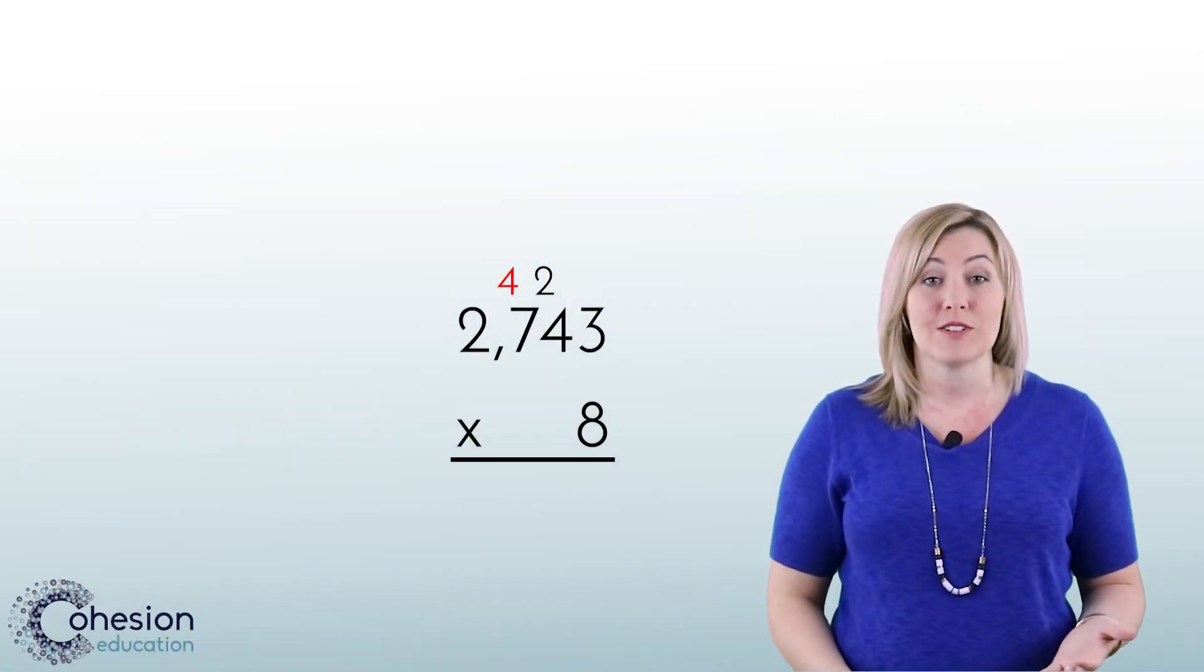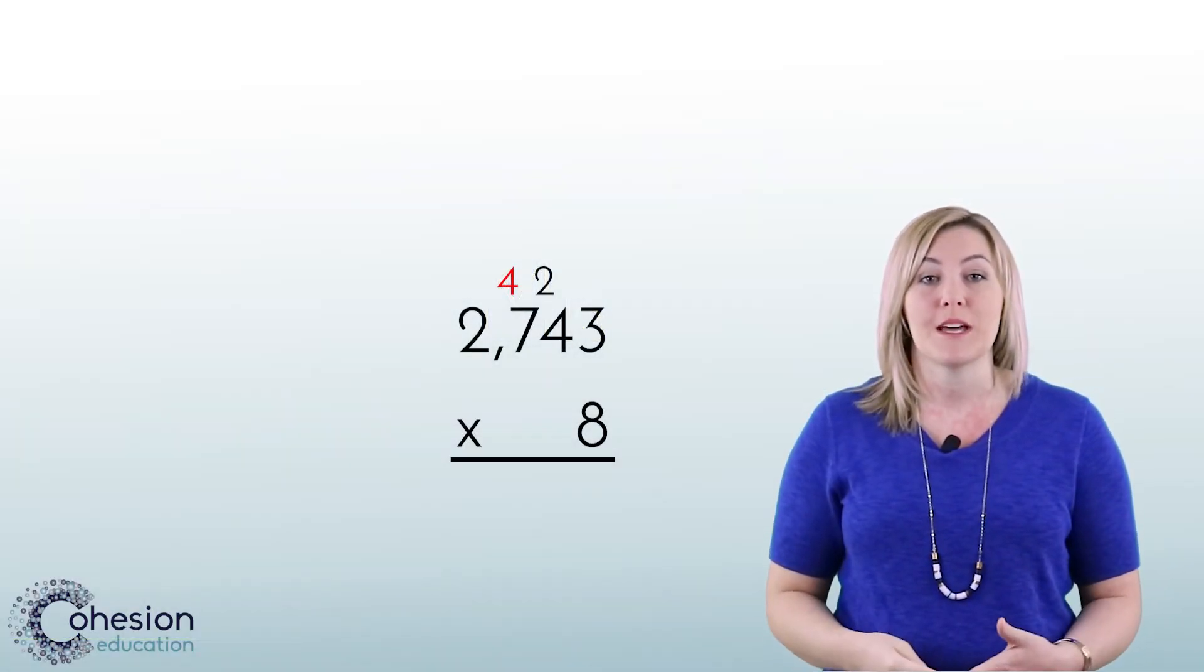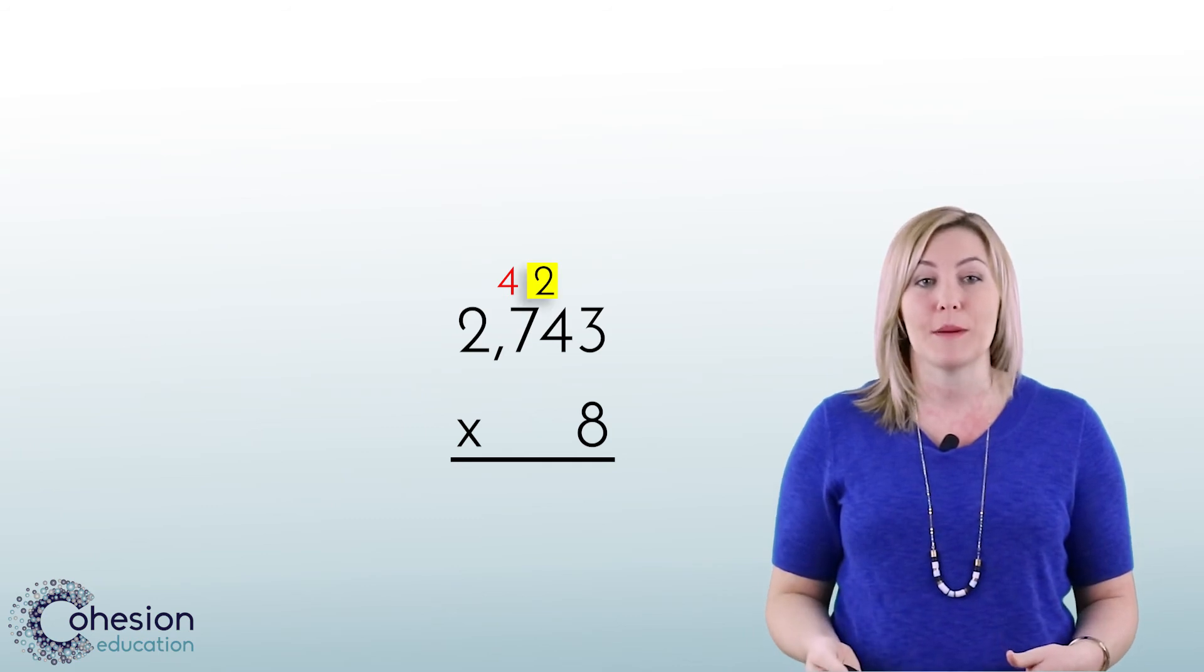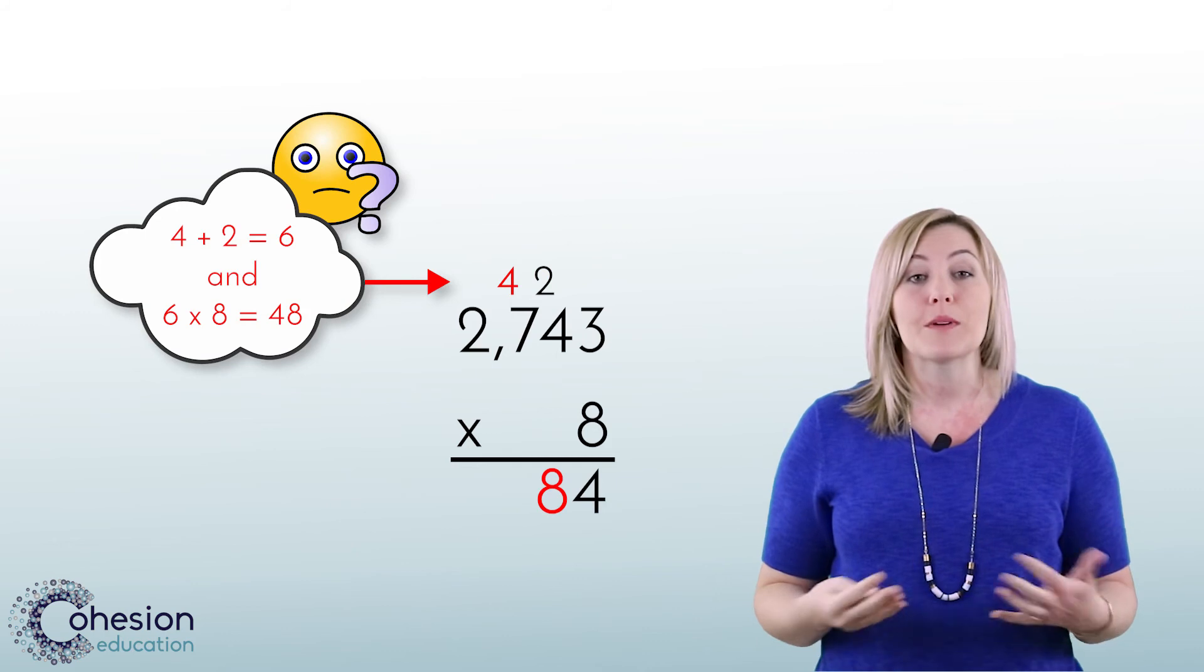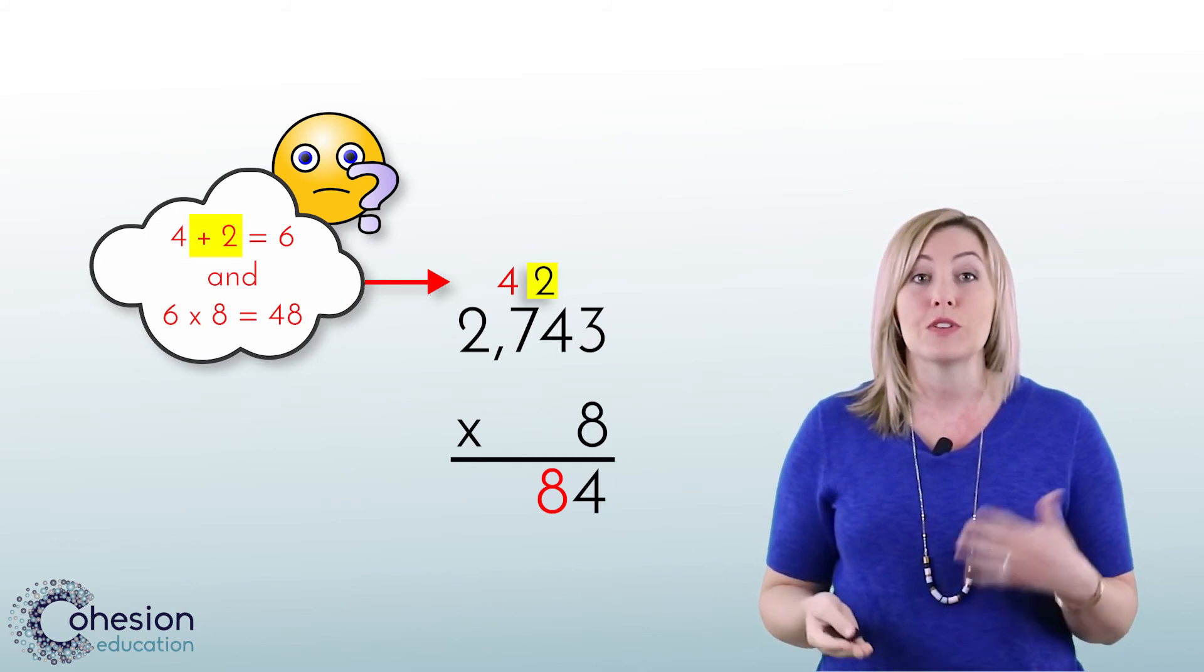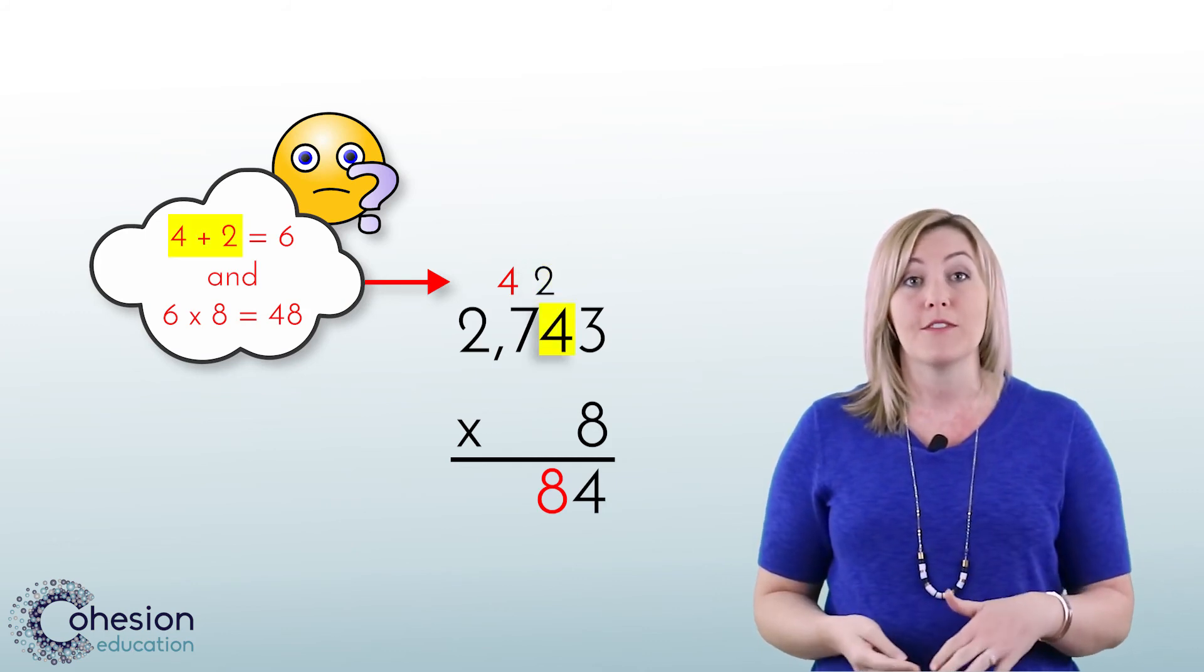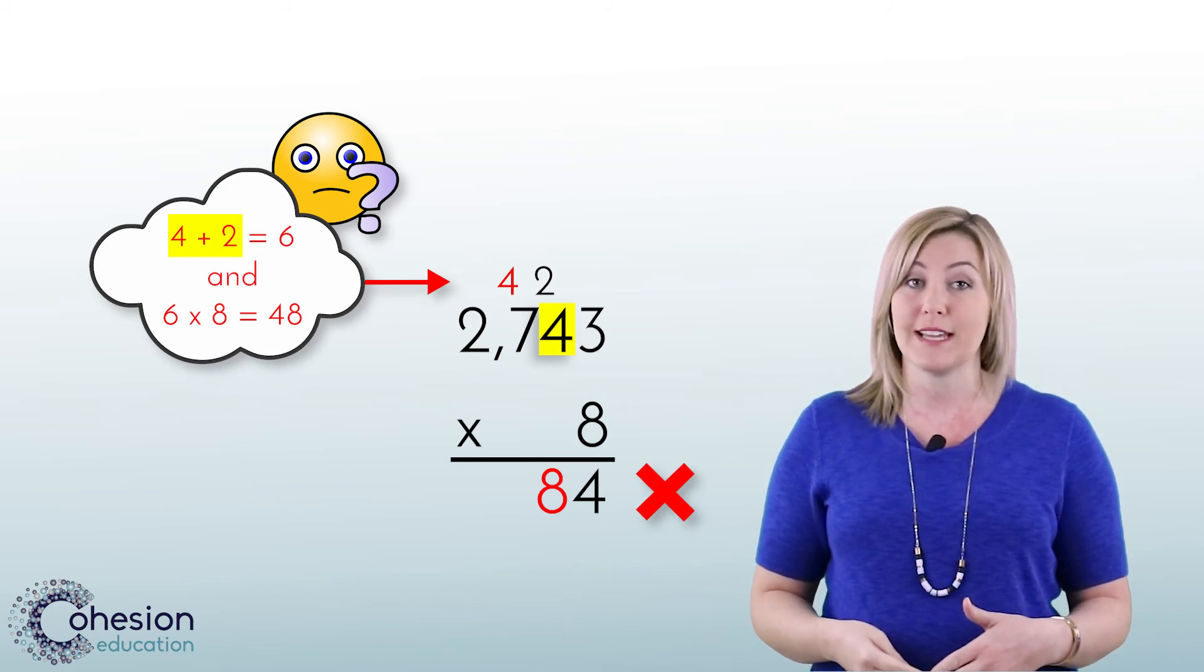A common error students may make when multiplying by one-digit numbers is they may add the regrouped numbers before multiplying instead of after. For example, in our problem we did, some students may have added the 2 to the 4 and then multiplied for an incorrect total of 48.